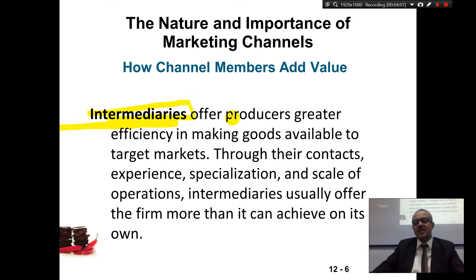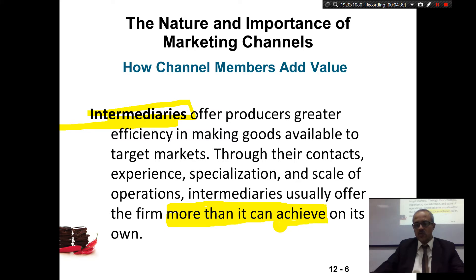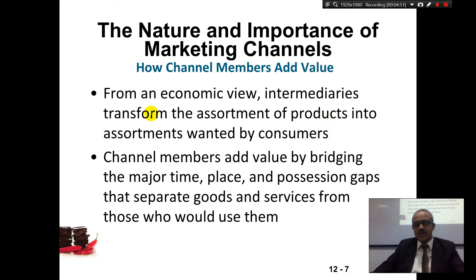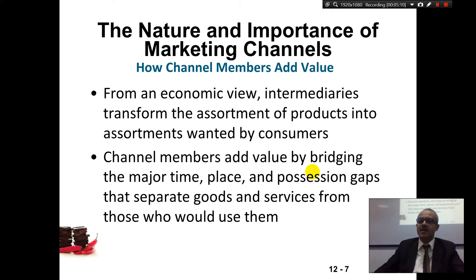Intermediaries are everyone in between — people who offer producers greater efficiency in making goods available to target markets through their contacts, experience, specialization, and scale of operations. Intermediaries usually offer the firm more than it can achieve on its own. Why do you need an intermediary? Because they can achieve more than what you can do alone. For example, Sony wants Al-Hidari to work in Yemen and provide support because Al-Hidari gives them more than what they can achieve on their own. From an economic view, intermediaries transform the assortment of products into assortments wanted by consumers. Channel members add value by bridging major time, place, and position gaps. Sony is in Japan — everyone between here and Japan is an intermediary helping make it available.